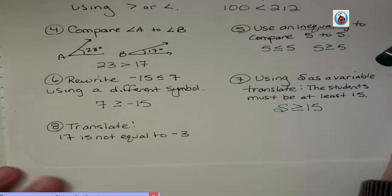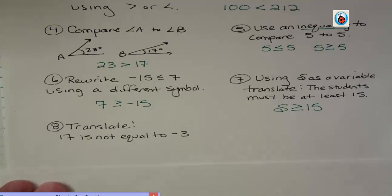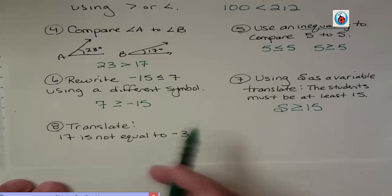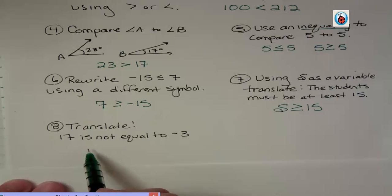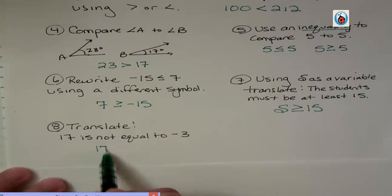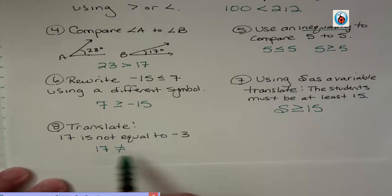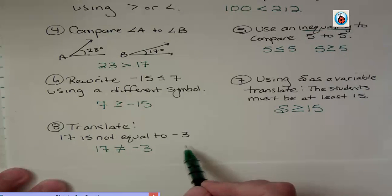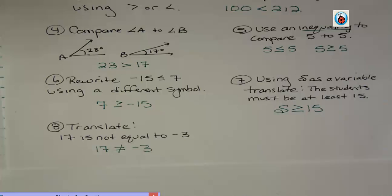And finally, translate 17 is not equal to negative 3. Well, if it's not equal to, then we could say it's less than or it's greater than. And we can also use, this is not an inequality symbol, but we could say 17 is not equal to, okay? So that's another way to say that. We can also use that symbol.